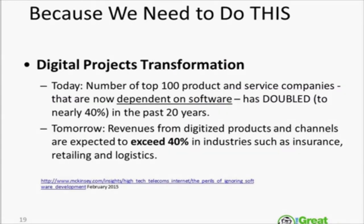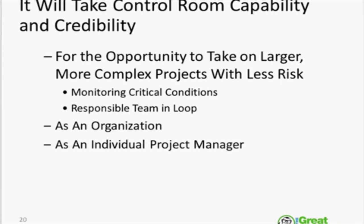The number of top 100 product and service companies now dependent on software has doubled to nearly 40 percent of all industries just in the past 20 years. Revenues from digitized products and channels are expected to exceed 40 percent, which means that digitalization of whatever we're working on today is happening at a breakneck pace. Projects do not have the leisure of the rework that we've had in the past. We have to monitor the critical conditions and keep the responsible teams in the loop. There's more and more risk and complexity, and we need to deal with that.